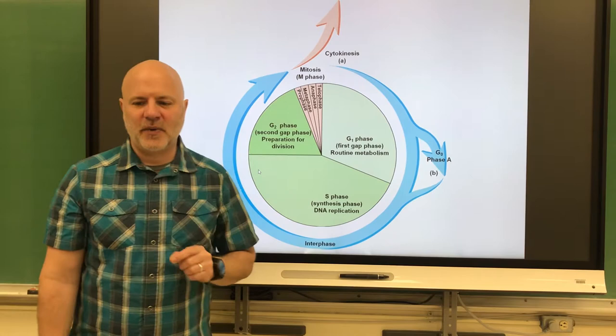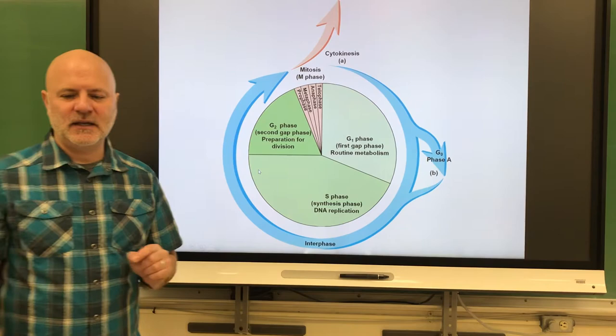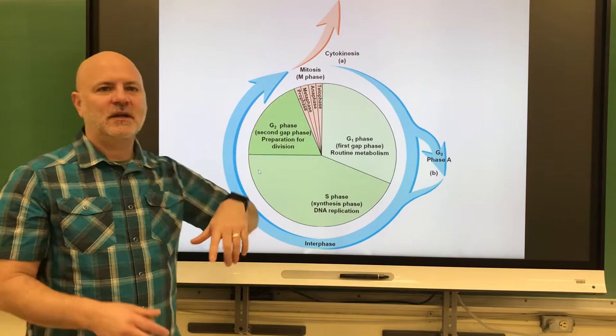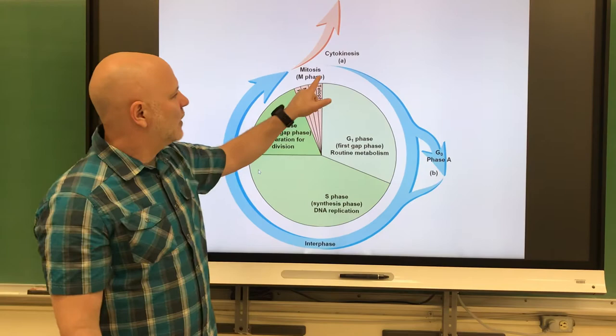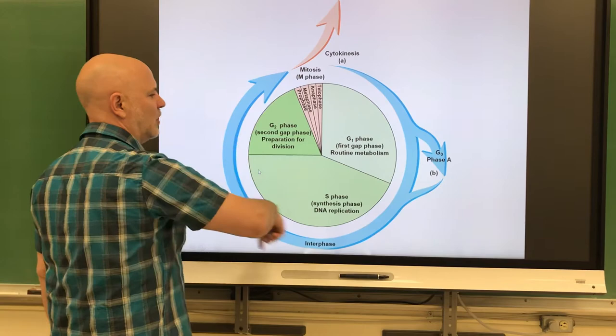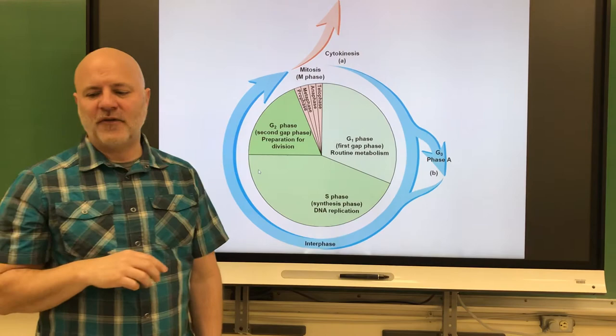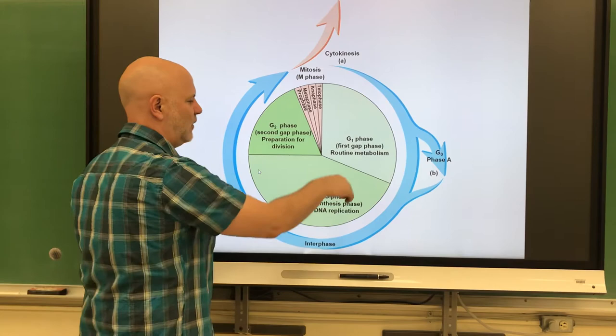After G2 we go through the M phase, which is the entire cell division stage — the cell undergoes mitosis and cytokinesis. Then it can start all over. All of this — G1, S, and G2 — is what is shown as interphase. Interphase is the period in the cell cycle when the cell is not actively dividing.